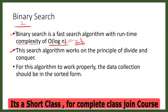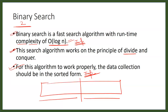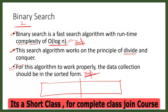We divide the whole data into two equal parts — a first part and a second part — which is why it is said to work on the principle of divide and conquer. For this algorithm to work properly, the data collection should be in sorted form. Binary search is a special technique where the data must be in sorted order, either increasing or decreasing. If the data is not in sorted form, you cannot use this technique.